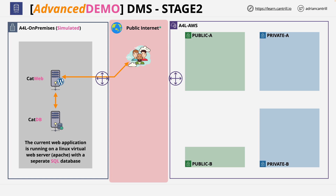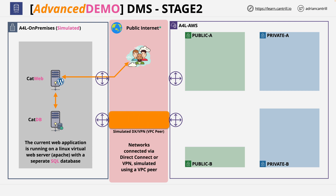Welcome back to Stage 2 of this advanced demo series, where you're going to be provisioning private connectivity between the simulated on-premises environment on the left and the AWS environment on the right. Now in production, you'd be using a VPN or Direct Connect, but to simulate that in this advanced demo series, you're going to be configuring a VPC peering connection between the on-premises and AWS environment. So let's switch over to the AWS console and get started.